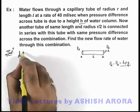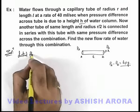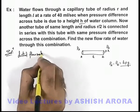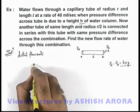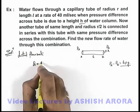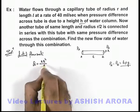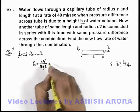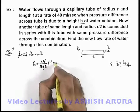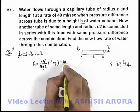find out the initial flow rate, which can be given as Q. It will be equal to π r⁴ / (8η l) times the pressure difference h ρ g. This is given as 40 ml per second.